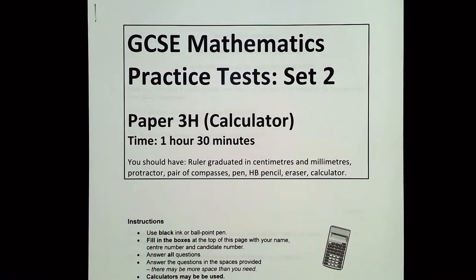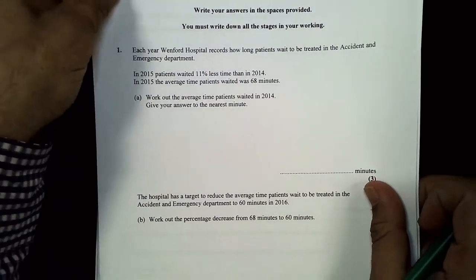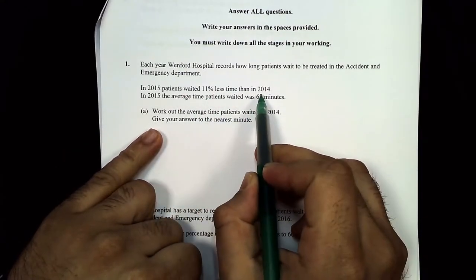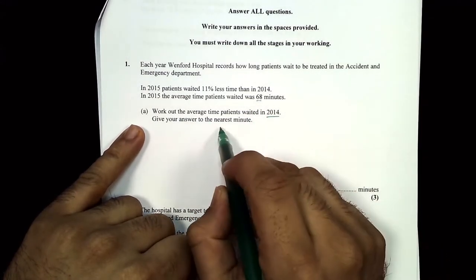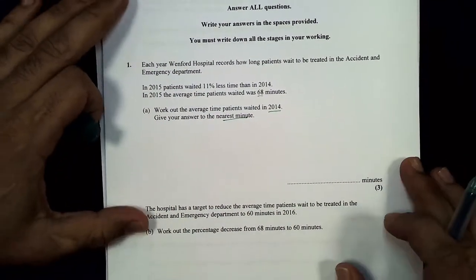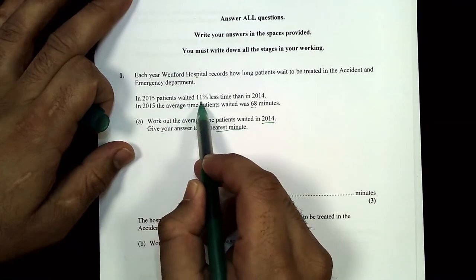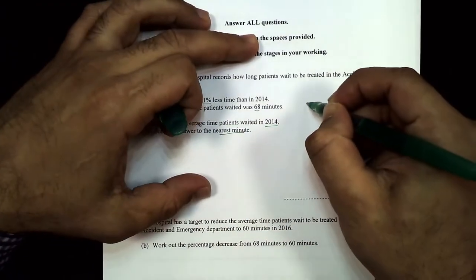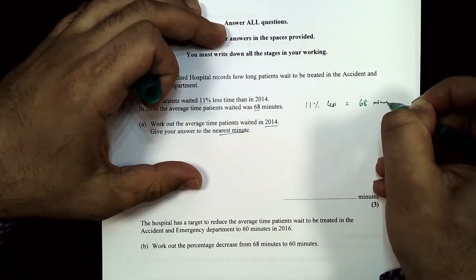Question 1: each year a hospital records how long patients wait to be treated in accident and emergency. In 2015, patients waited 11% less time than in 2014. In 2015 the average wait was 68 minutes — work out the average wait in 2014, giving your answer to the nearest minute. So 11% less gave us 68 minutes.